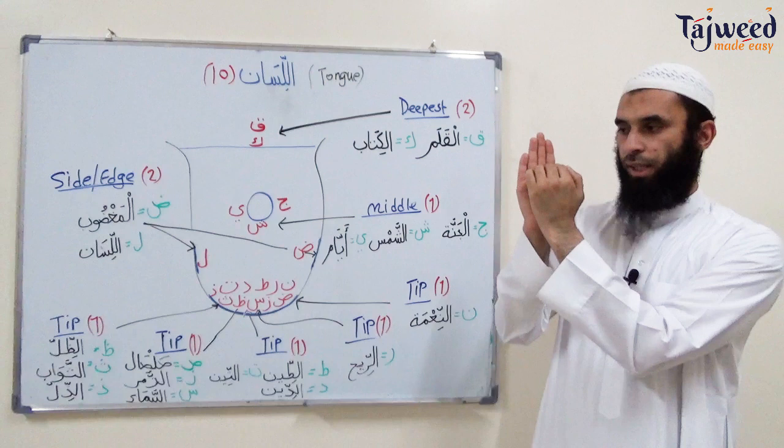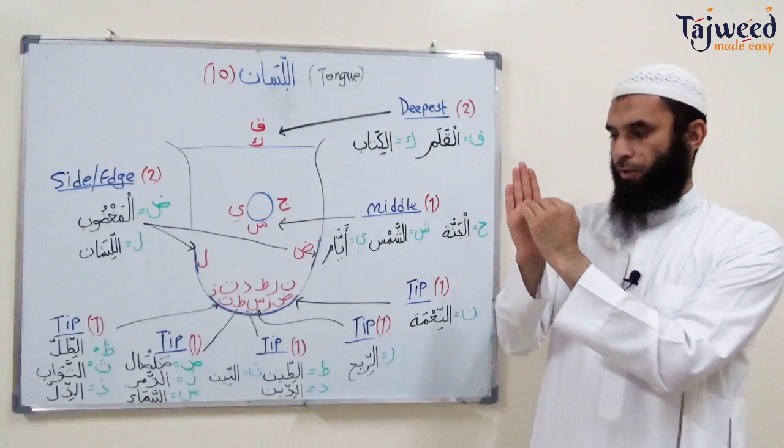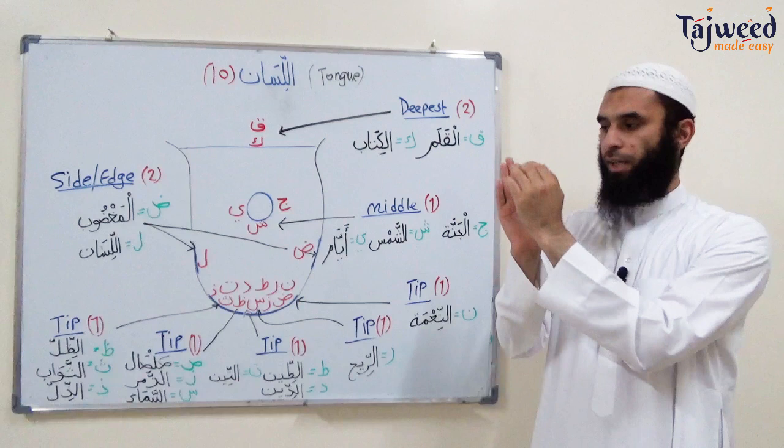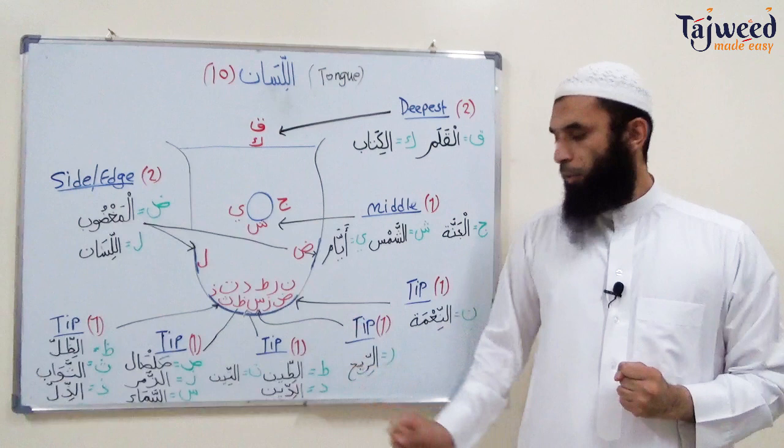Beneath Noon is Ra. Instead of the tip of the tongue, it uses the top tip of the tongue touching the gum line — slightly different from Noon. Al-Reeh, Ra, Ri, Ru.